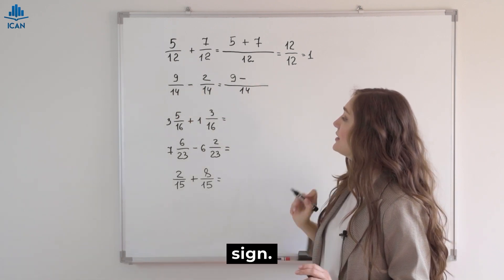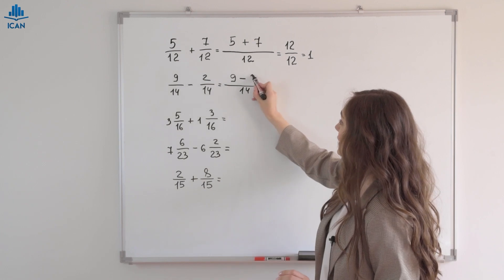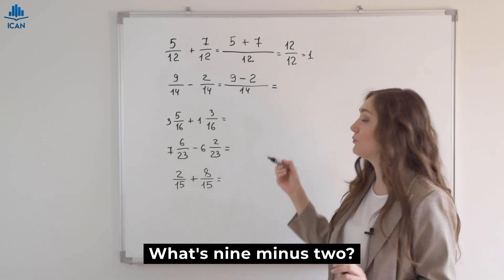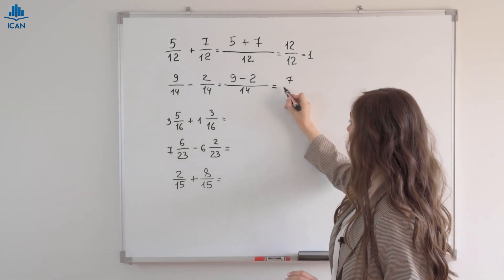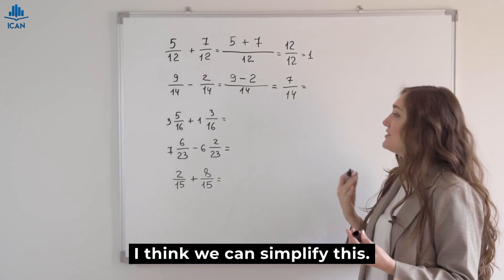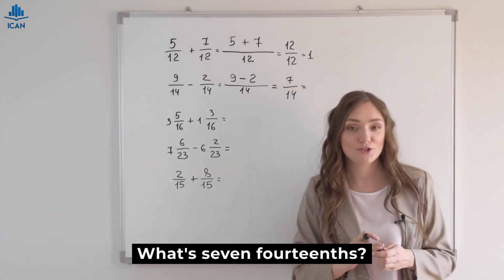Here we have subtraction. Don't forget the minus sign. And the second number. What's 9 minus 2? 7 fourteenths. I think we can simplify this.